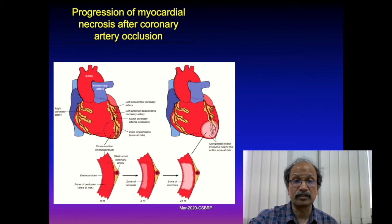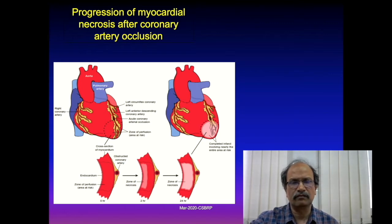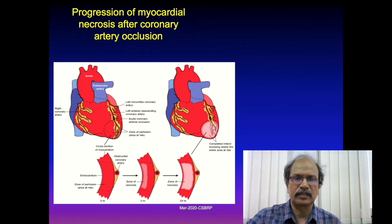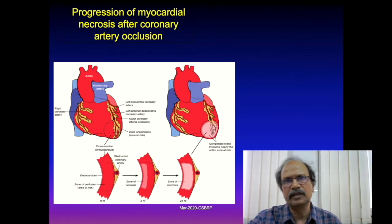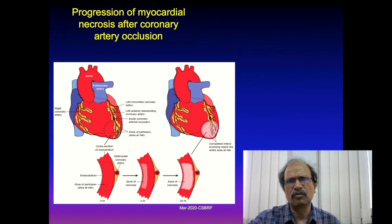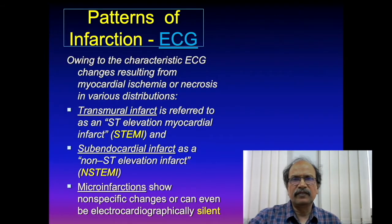Ischemic damage caused by a clot or obstruction in the anterior descending branch of the left coronary artery is illustrated in the diagram. The lower half represents the area at risk. With prolonged ischemia, infarction begins in the subendocardial region first, then progresses to involve the whole thickness of the myocardium.